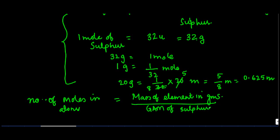We have sulphur. What is the mass of the element? The mass of the element that we have is 20 grams. And what is the gram atomic mass of sulphur? It's equal to 32. So we get 5 by 8 moles, which is 0.625 mole.